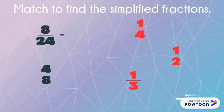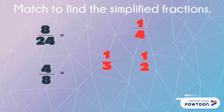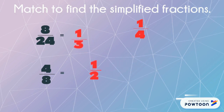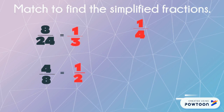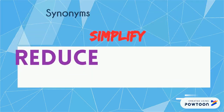Match the fractions to find their simplified counterparts. 8 twenty-fourths and 4 eighths. 8 twenty-fourths simplified is 1 third. And 4 eighths simplified is 1 half.